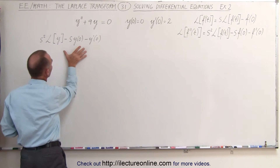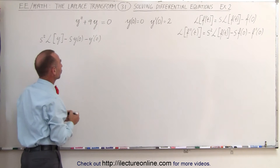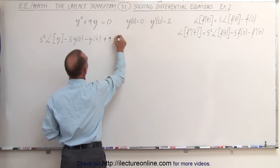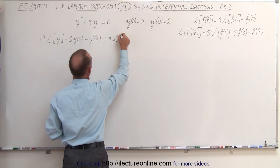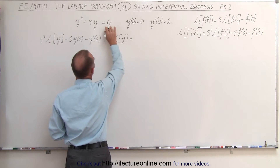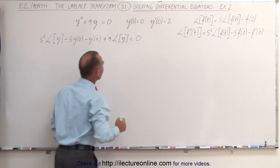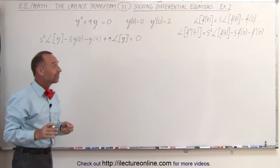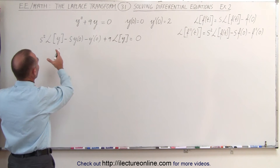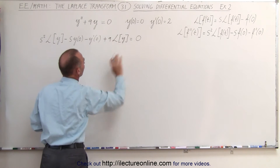And that's exactly what we have here. Now we take the Laplace transform of the second term, so that would give us plus 9 times the Laplace transform of y, and that equals the Laplace transform of 0, which is simply 0. So the next step is to combine all the terms that have the Laplace transform in them and then move everything else over to the other side.